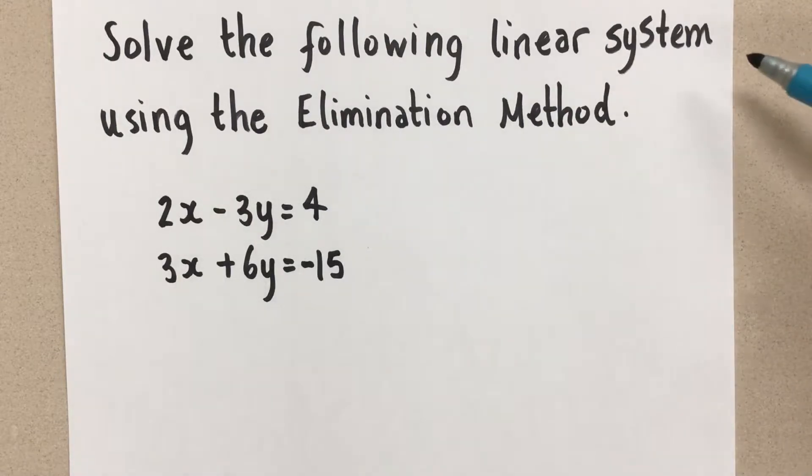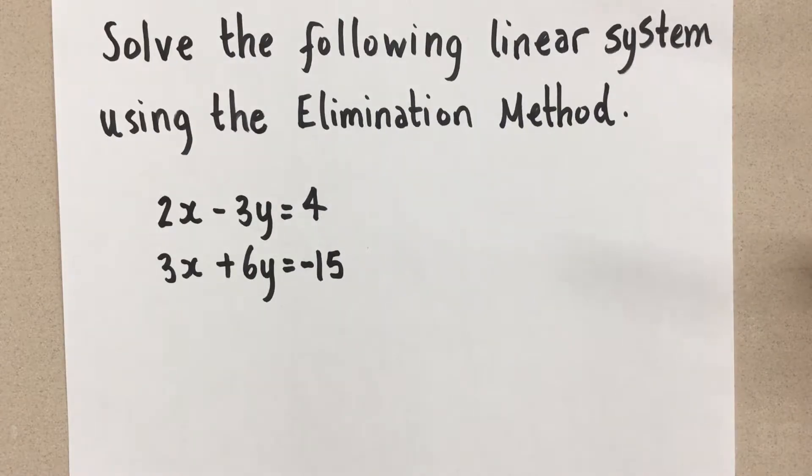So when a question says solve the linear system, that means to find the point of intersection. We know that when two lines are graphed, they cross at one point in most cases and we want to find what that point is.